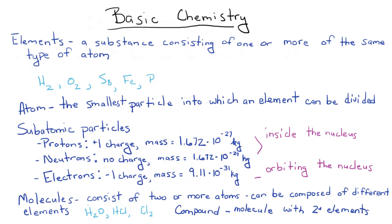These are some definitions you're going to need to know and understand. We start off with elements. Elements are a substance consisting of one or more of the same type of atom. An example of an element would be hydrogen or oxygen, sulfur, iron. I believe there are 112 elements total.